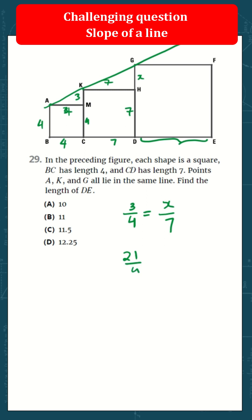We get 21 over 4 equals X, so X equals 5.25. The length of GD will be 7 plus 5.25, which is 12.25. Since it's a square, DE will also be 12.25. The answer is D.